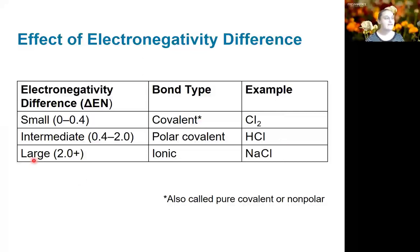If that difference is very small, we would classify it as covalent. This is also sometimes called pure covalent or nonpolar bonds. That's always going to be the case when you have two of the same element, and there's other cases where they have very similar electronegativities. We also have this intermediate range where we have polar covalent bonds such as HCl. And when it gets large, when that difference is larger than two, we would have an ionic compound such as sodium chloride.